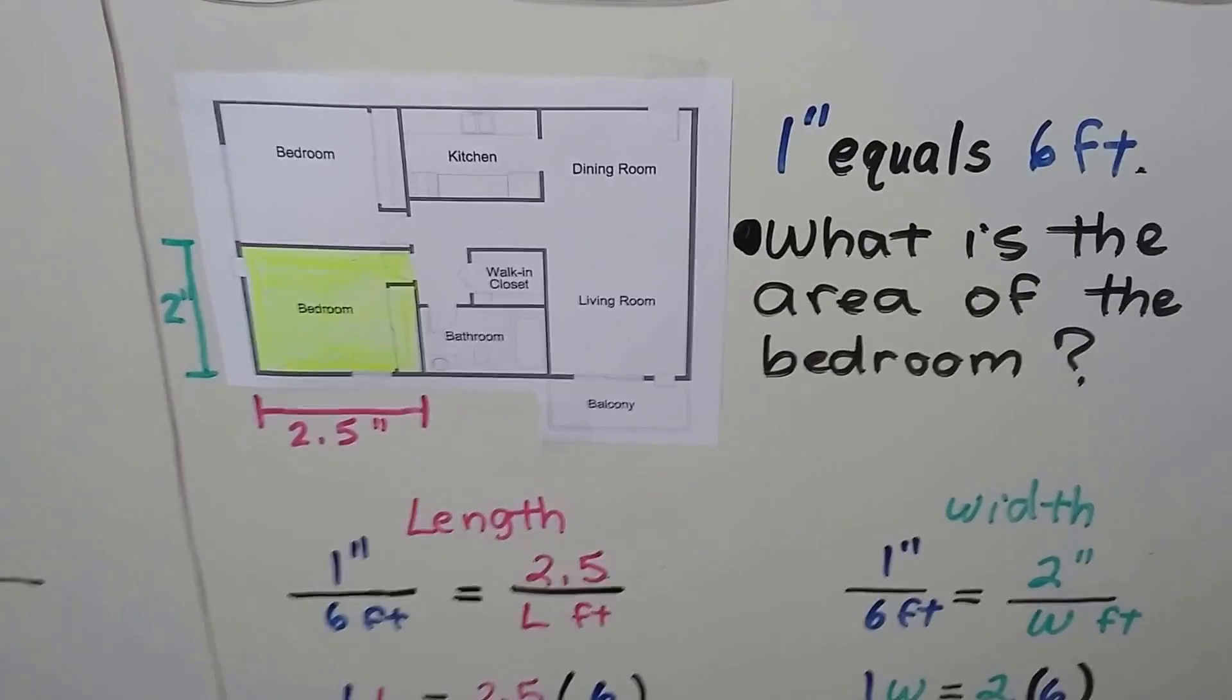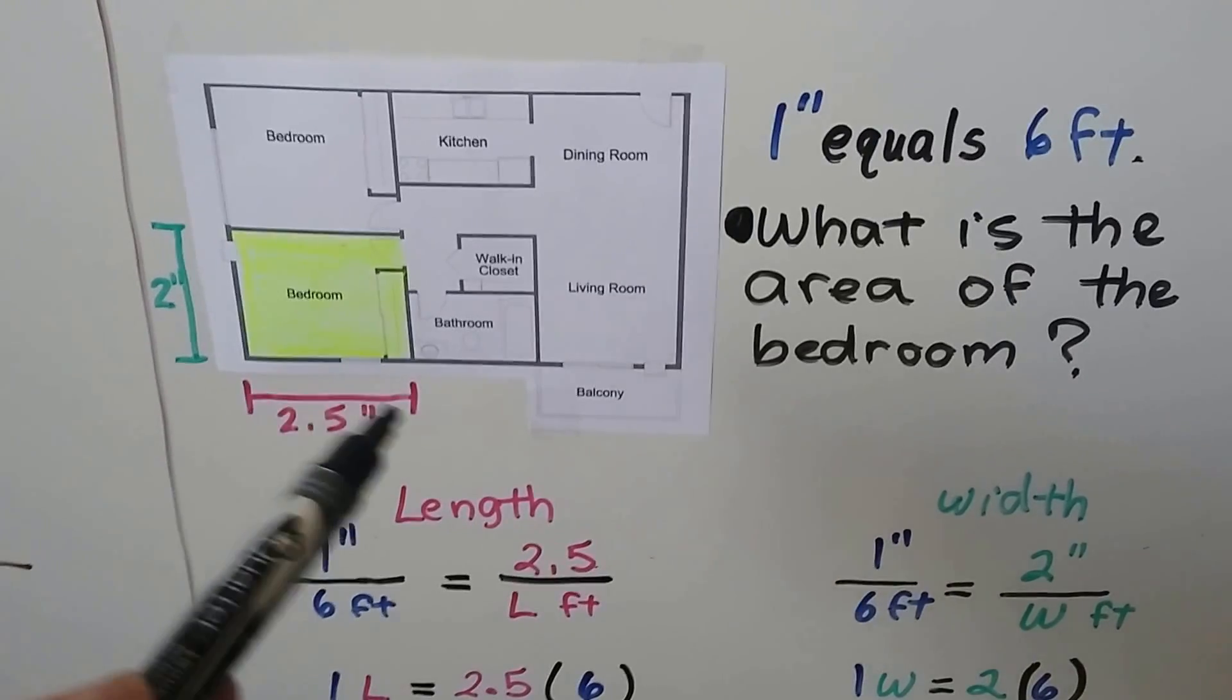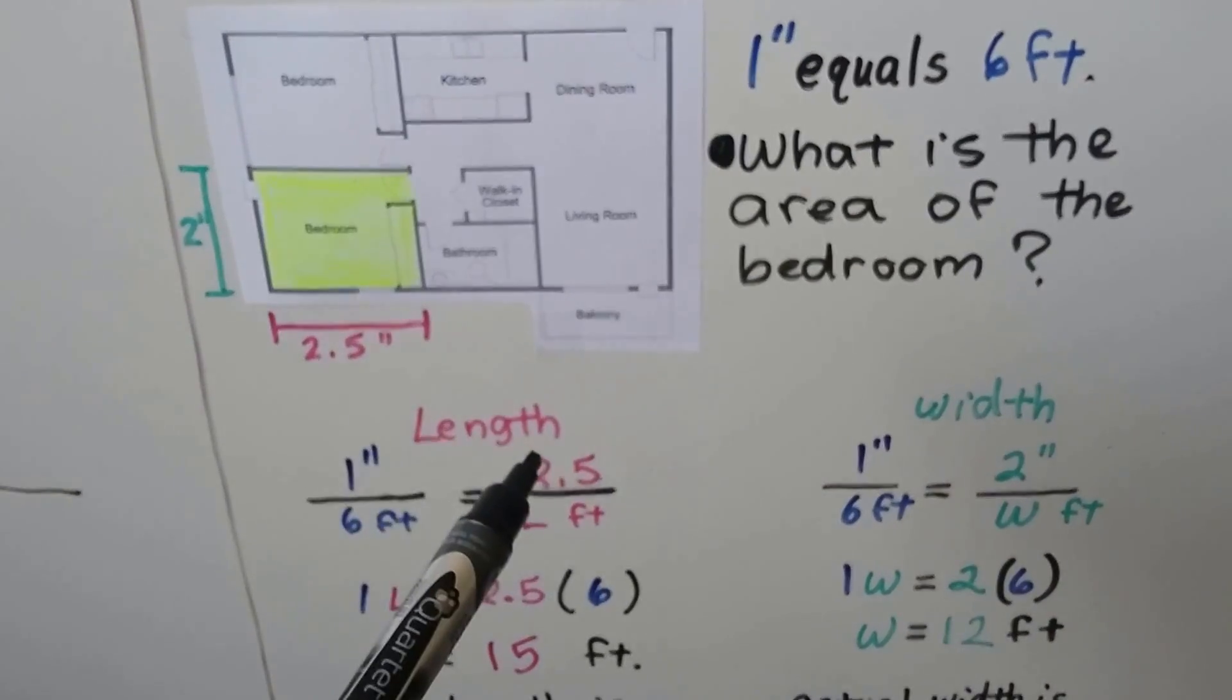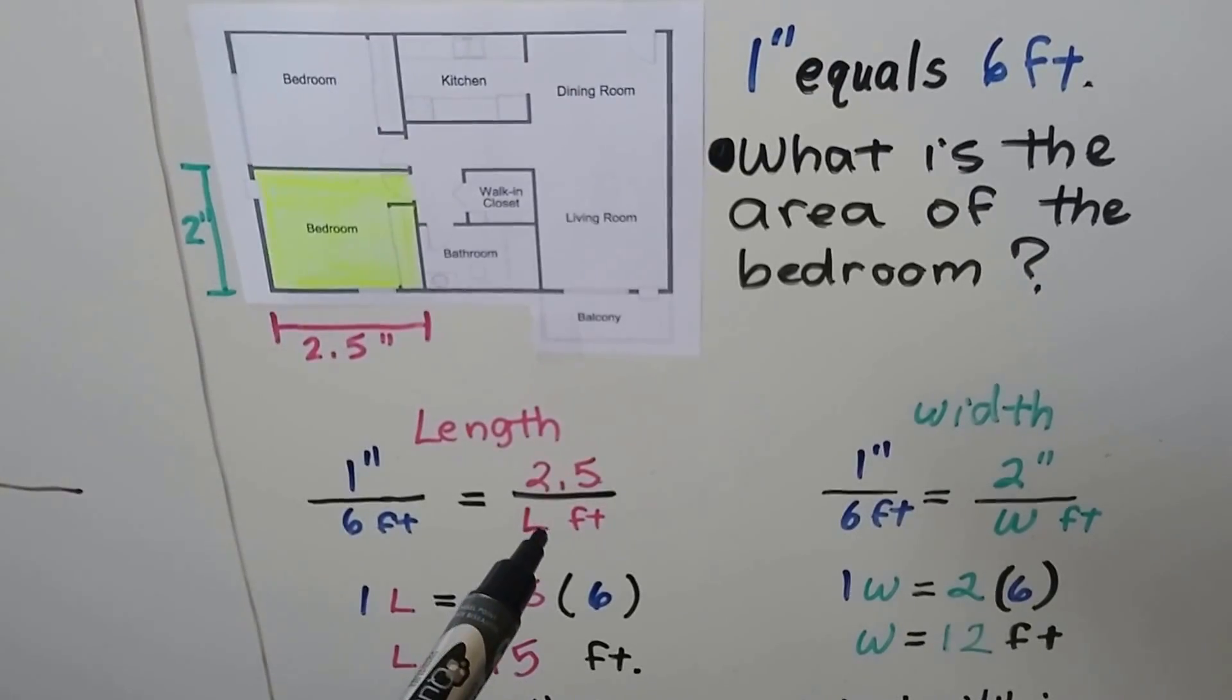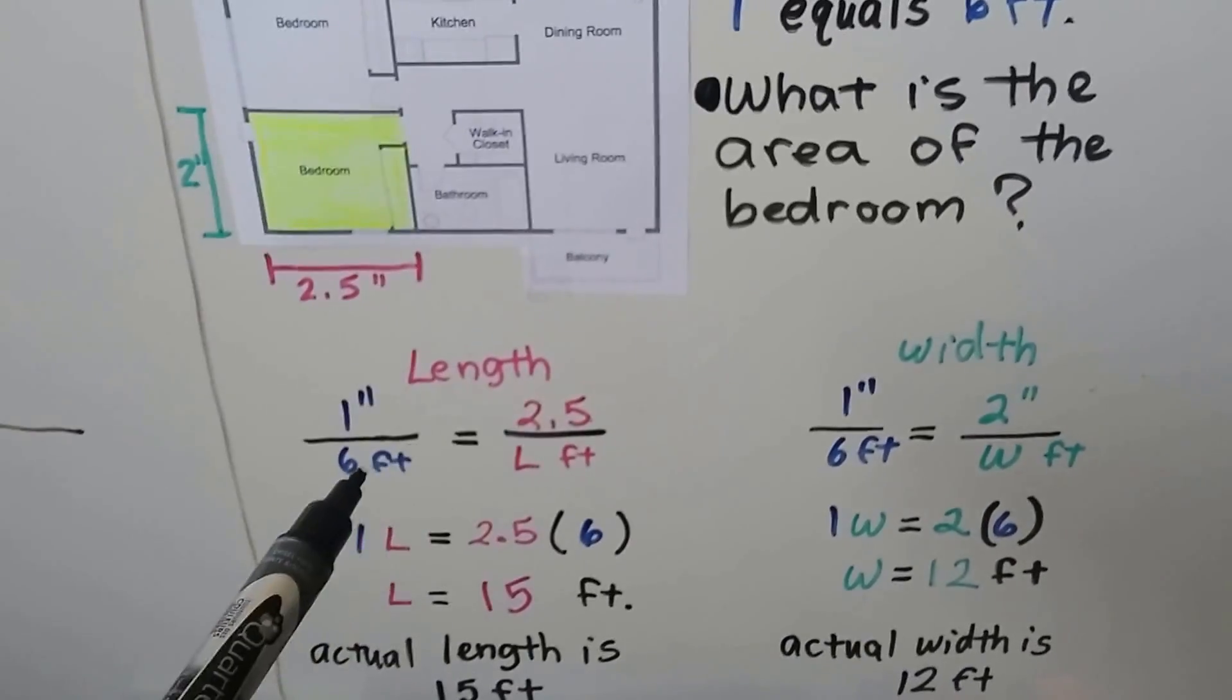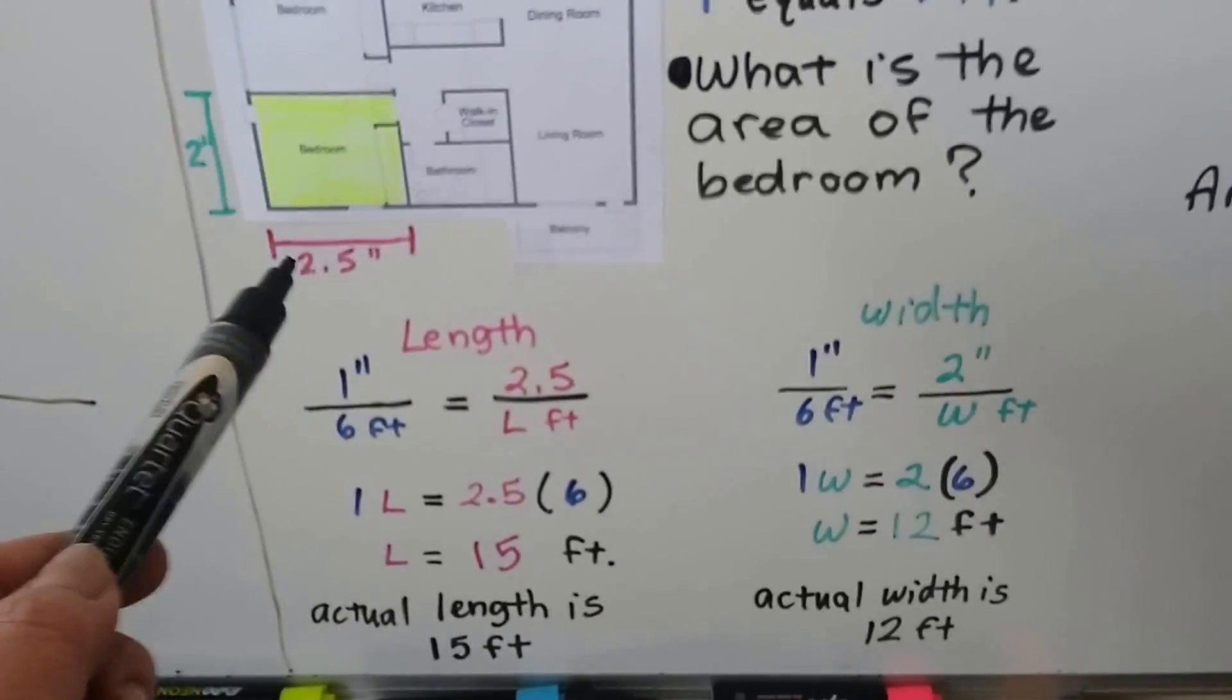Here we've got a two-bedroom apartment and one inch equals six feet. What's the area of this yellow bedroom? So, I measured it this way with my ruler and I got two point five inches. And I measured it this way and got two inches. Our fraction is one-sixth. Here's the actual measure for the length, two point five, and that's going to be over L. We could use x, but we're trying to find length, so it's better to use a variable that helps us, like L. We cross-multiply and get one L equals two point five times six. It tells us the length is fifteen feet. So, the actual length is fifteen feet going across this way.